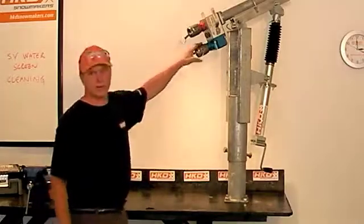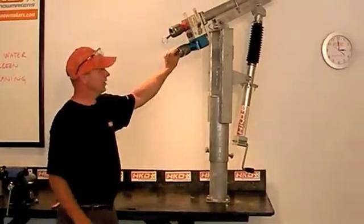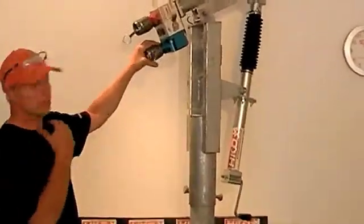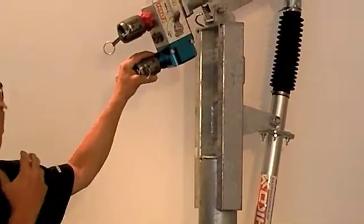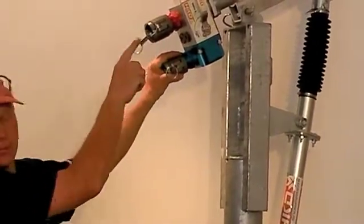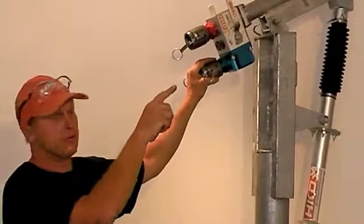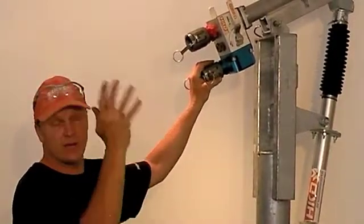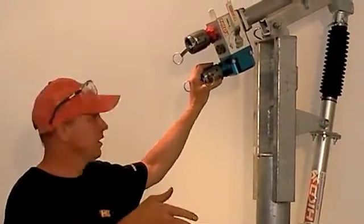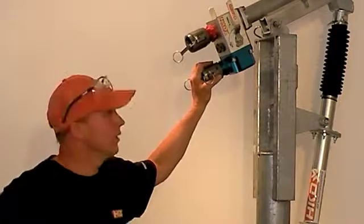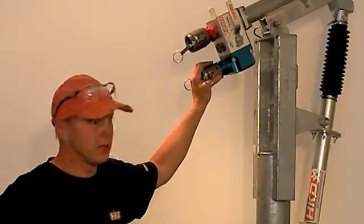We put the screens down here at the bottom of the gun inside the coupler so that it will catch anything being carried in the water before it gets up to the head of the gun in the nozzles. That prevents you from having to drop the head of the gun any time one of the nozzles gets clogged.